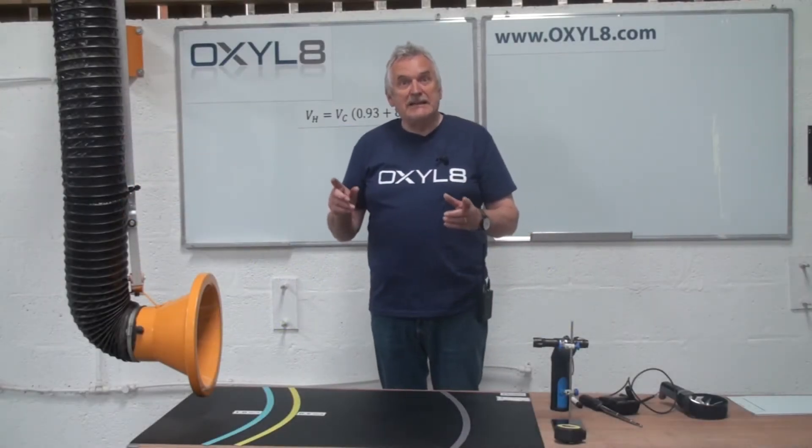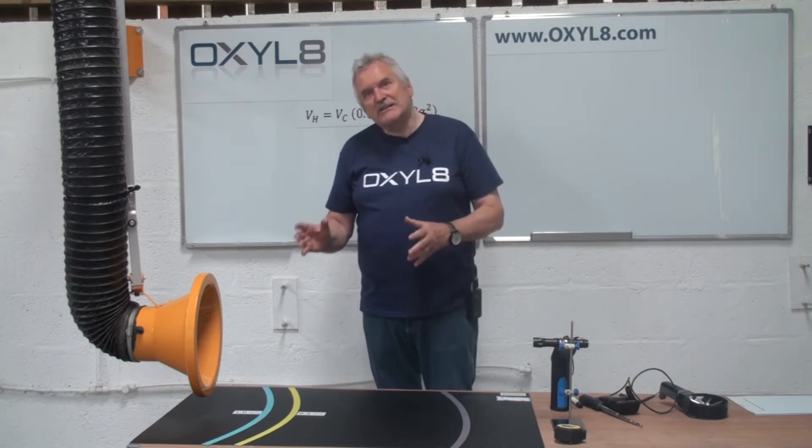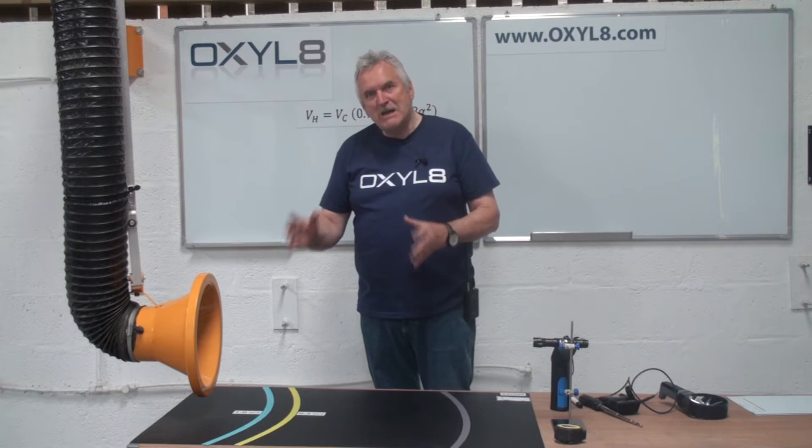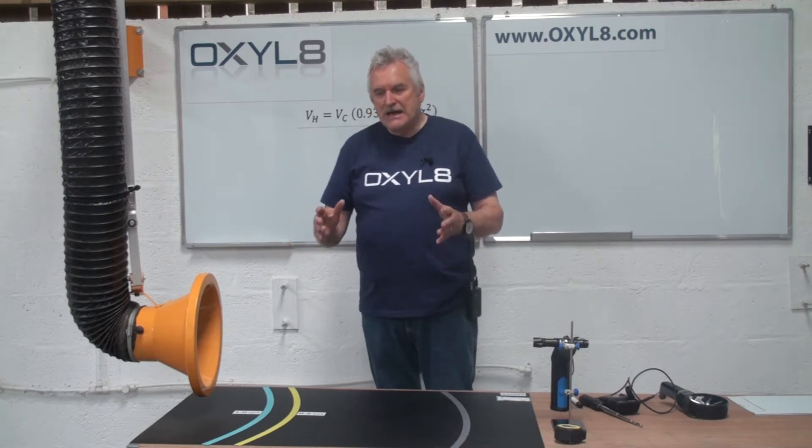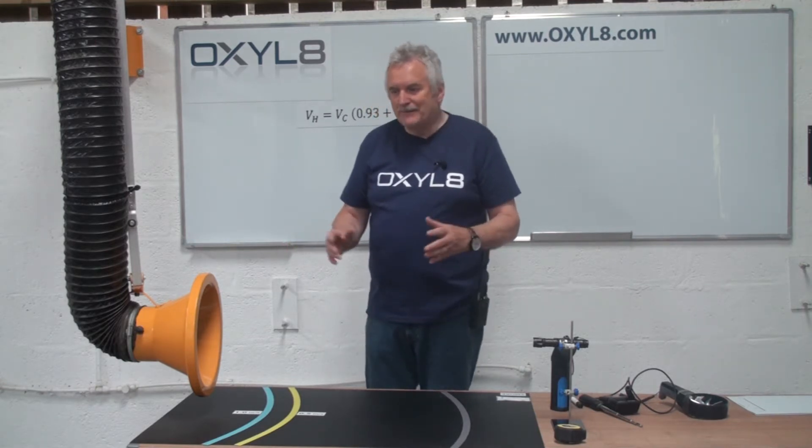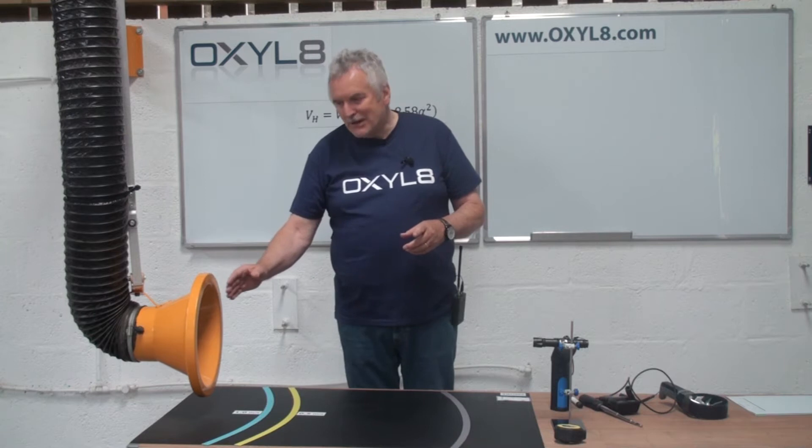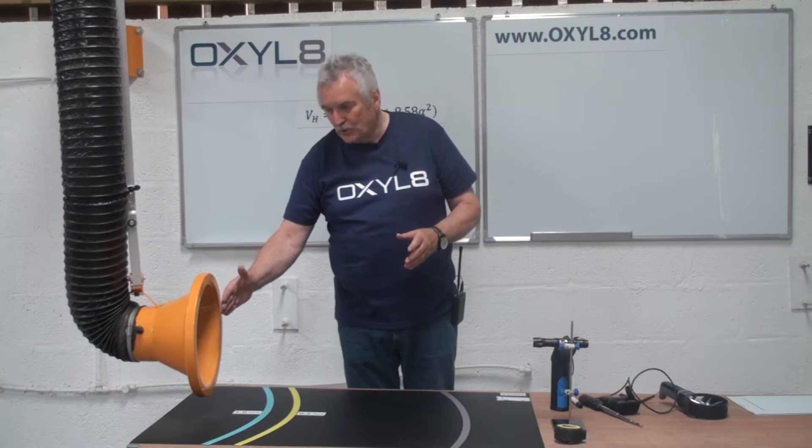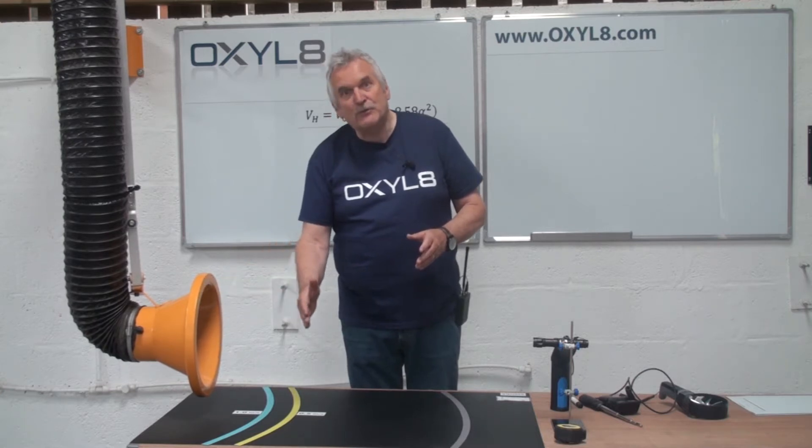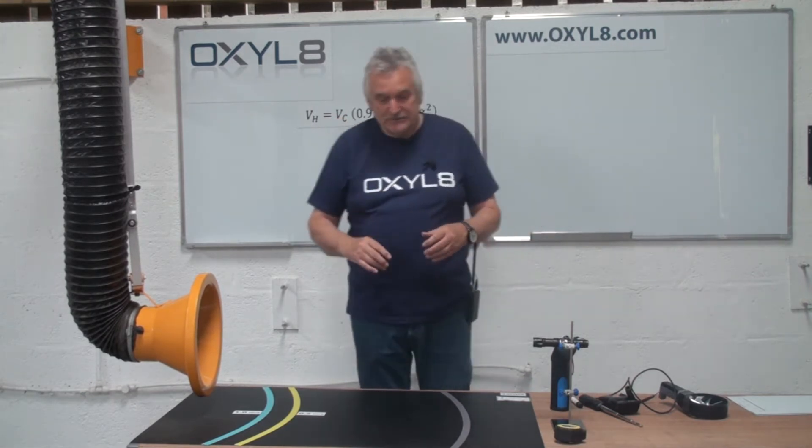Welcome to the second in the captor hood series, we're calling it Captor 102, where we're going to consider how we would physically measure the performance of a hood, captor hood, the captor distance, and therefore the control area. What we talked about in the previous video was that there are ways of calculating how quickly the velocity at the face will reduce as it comes away from the hood entrance. Fletcher's nomogram gives us this equation.